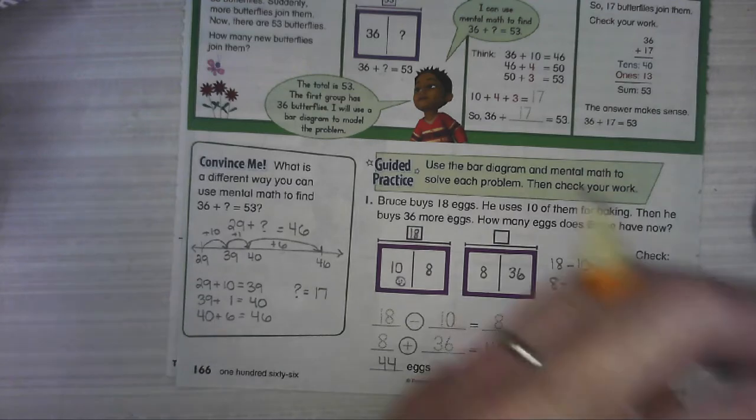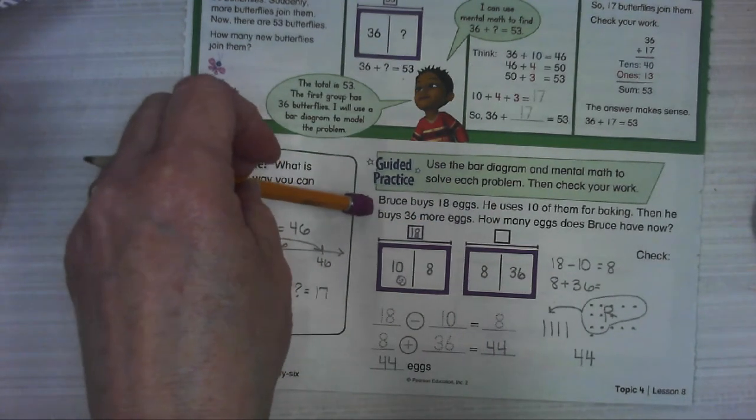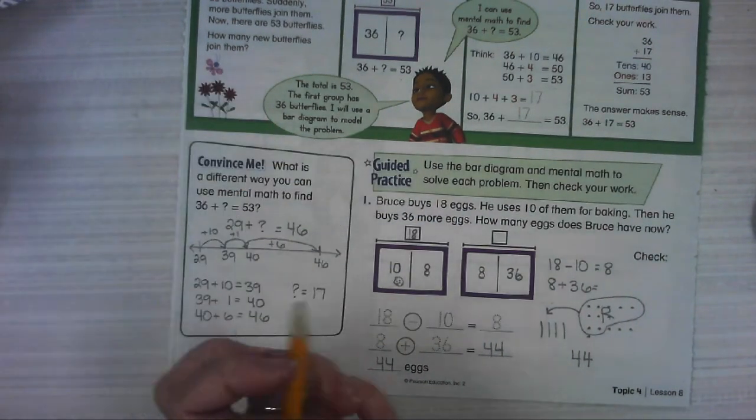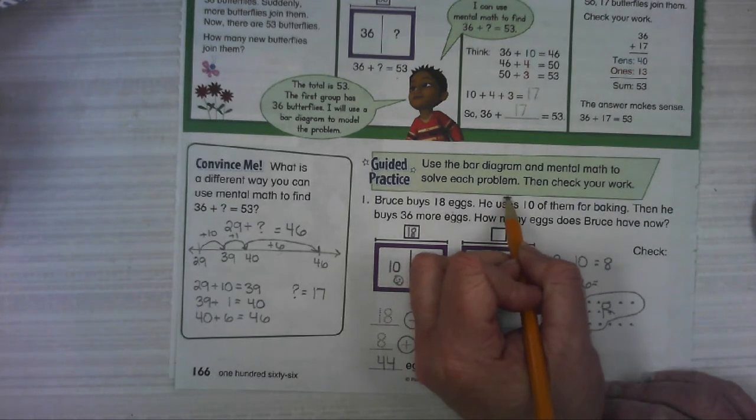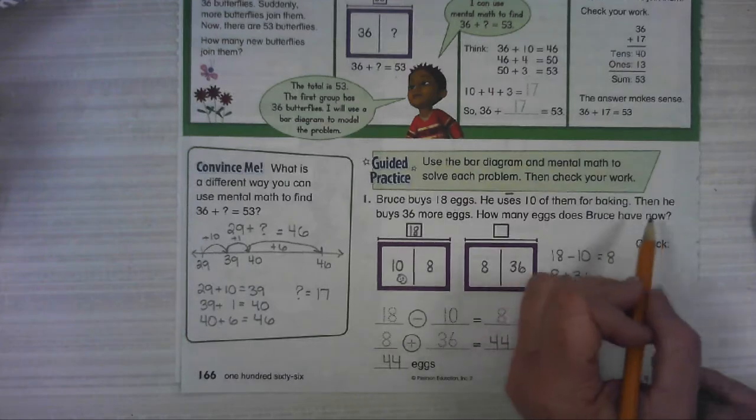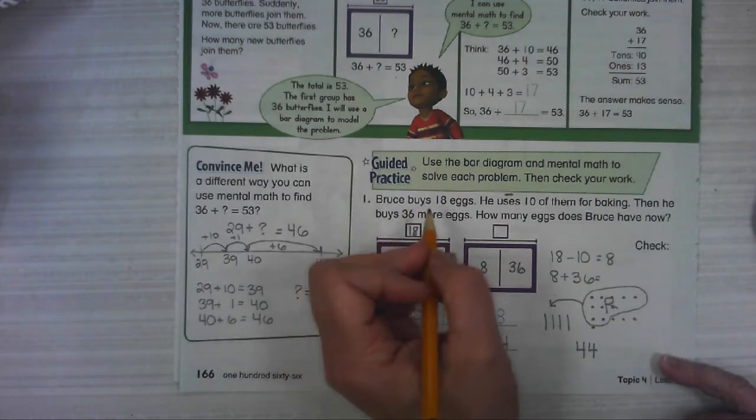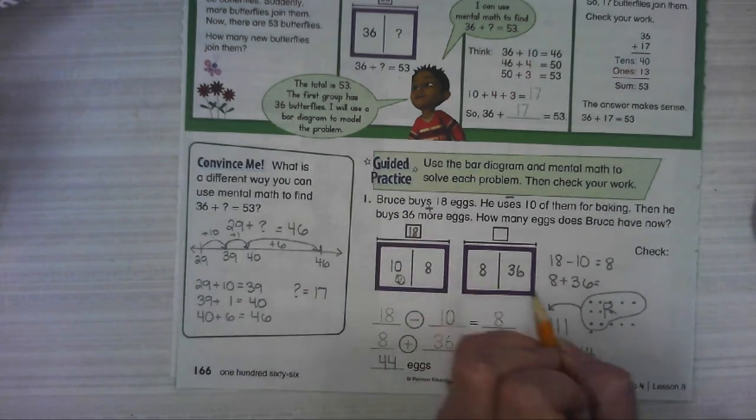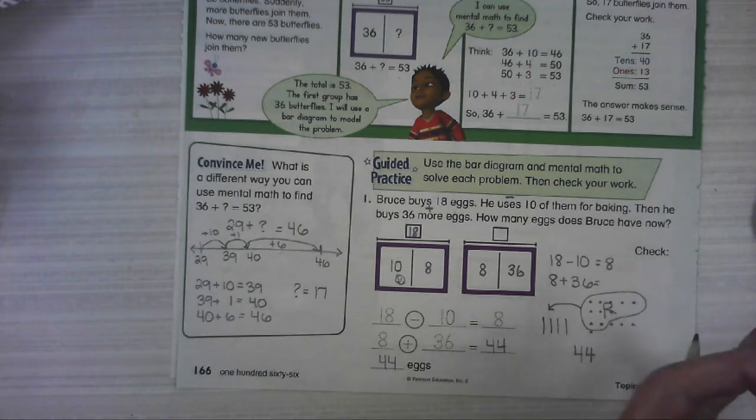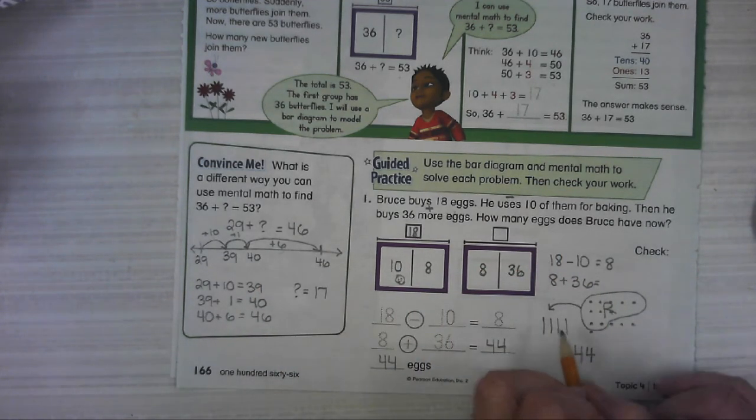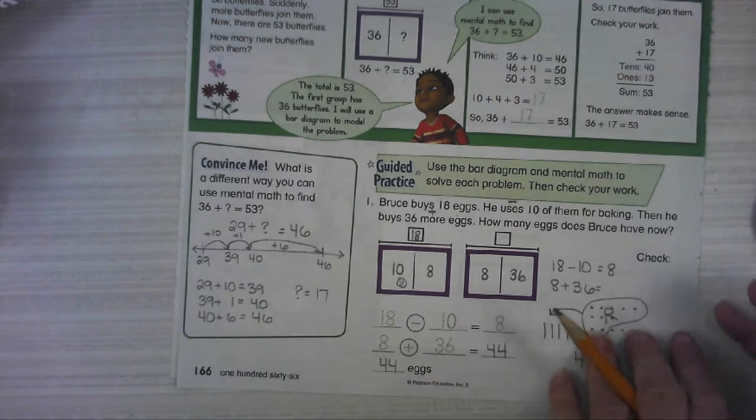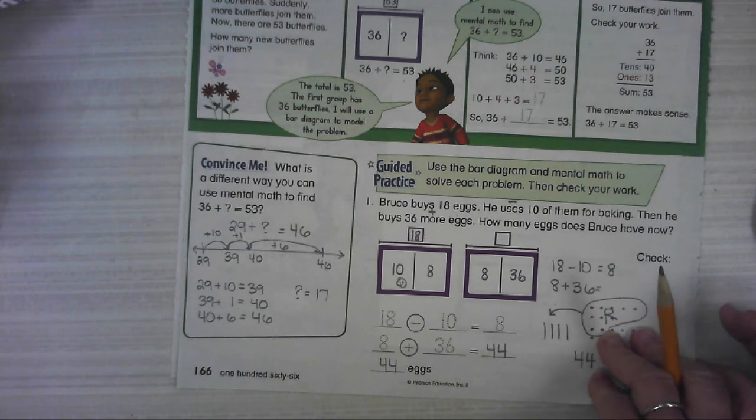Now, in my opinion, the hardest part of this problem is understanding what the story is telling you. That he starts out with 18 eggs and he uses them. Using them is subtraction. Then he buys 36 more eggs. More usually means we're adding something. We're putting something else in our group. So we have to understand exactly what's going on. We have to really work on visualizing the math.